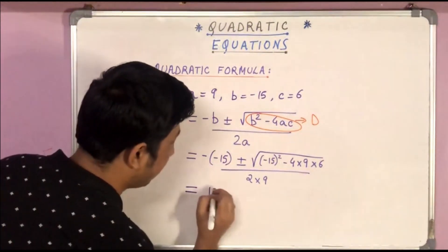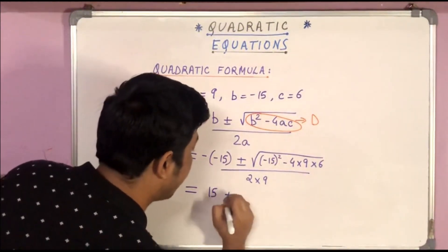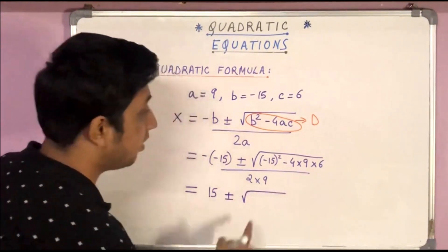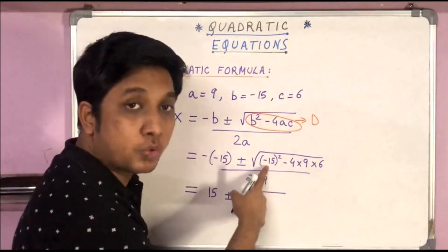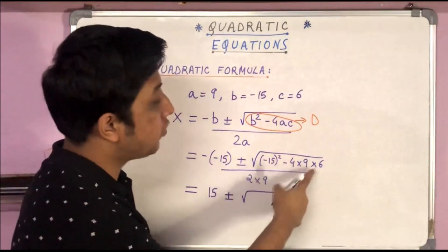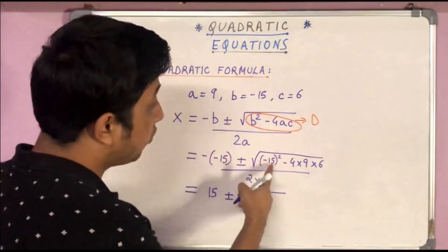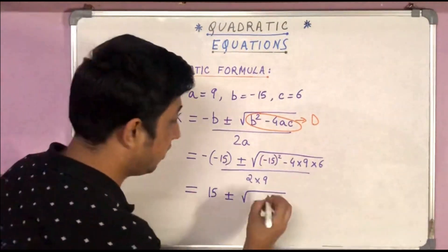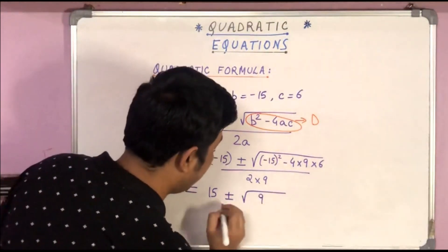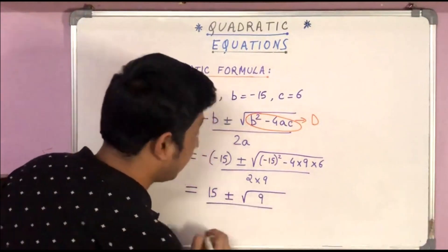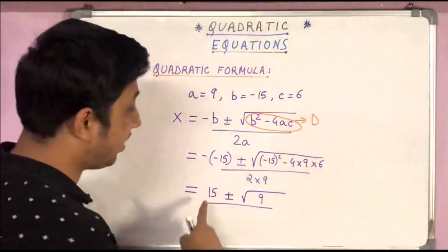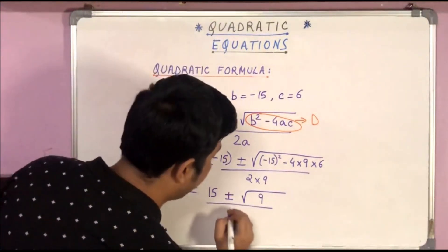Equal to 15 ± √((-15)² is 225, and 4 × 9 × 6 would come out to be 216. So 225 - 216, we get 9). So 15 ± √9 divided by 18.